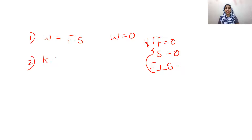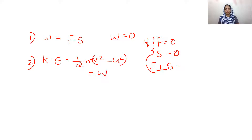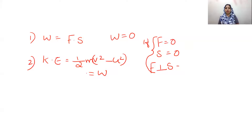If we look at the kinetic energy formula, which is half into M into V square minus U square — change in kinetic energy — that will be equal to the amount of work done. Work done will be stored inside the object as its kinetic energy. So change in kinetic energy equals work done.